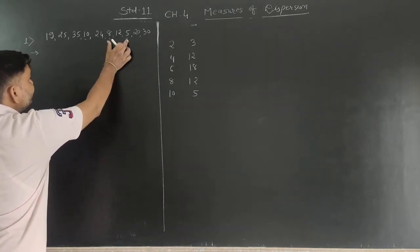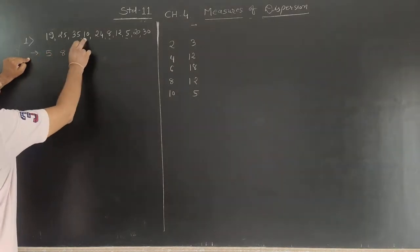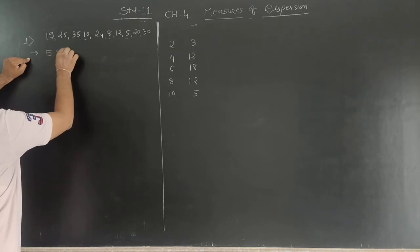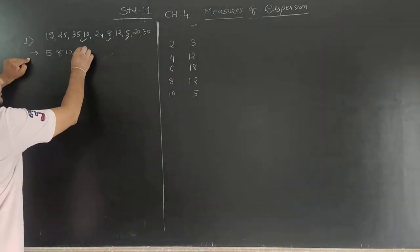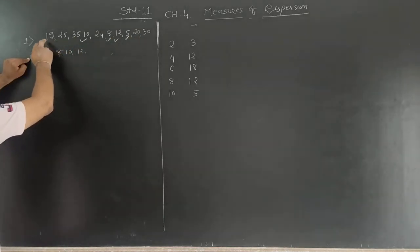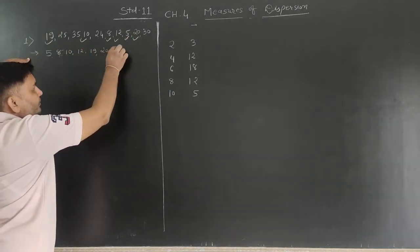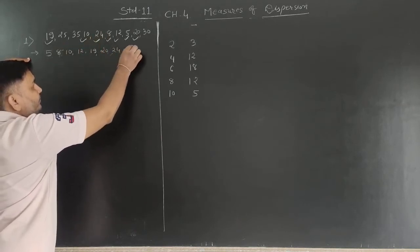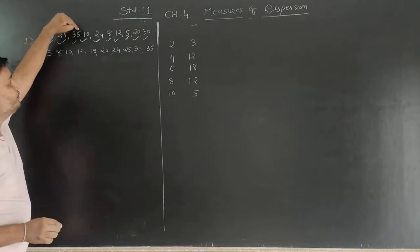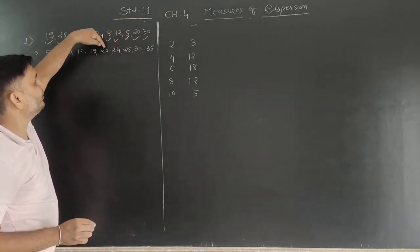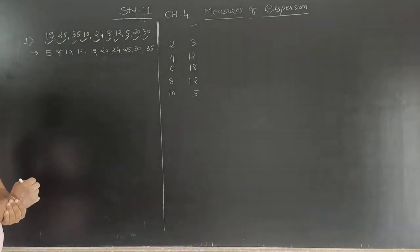We tally all observations to confirm they are arranged in ascending order. There are 10 observations total: 5, 8, 10, 12, 18, 19, 20, 24, 25, 30. All observations are considered in arranging the order.